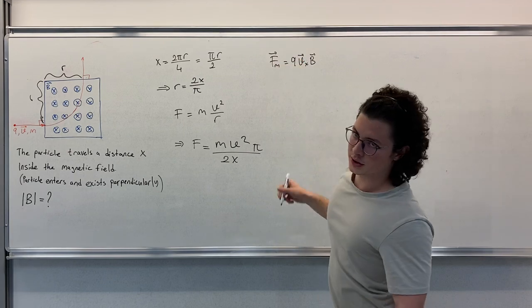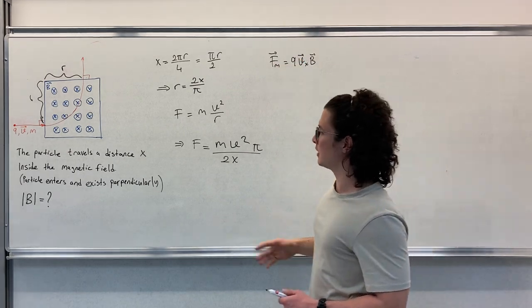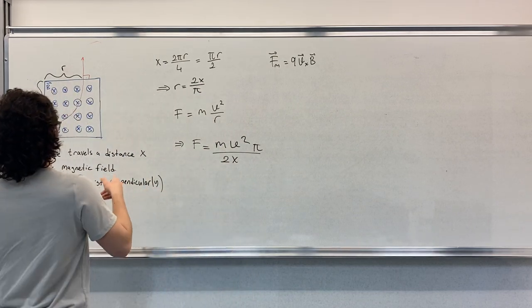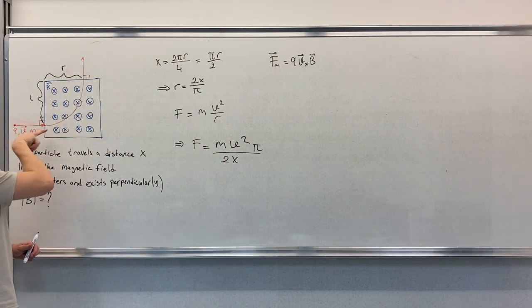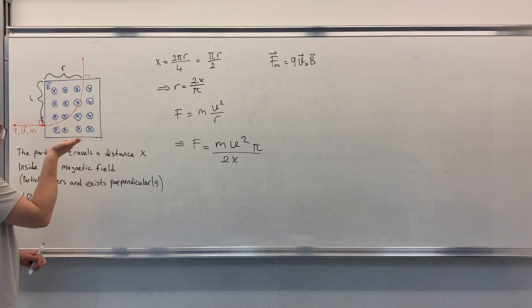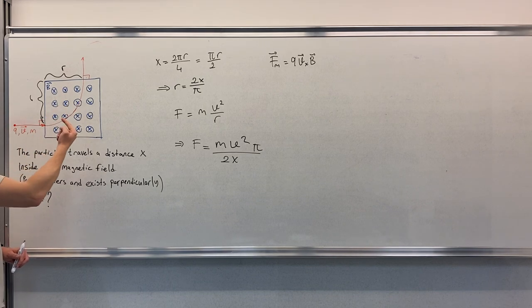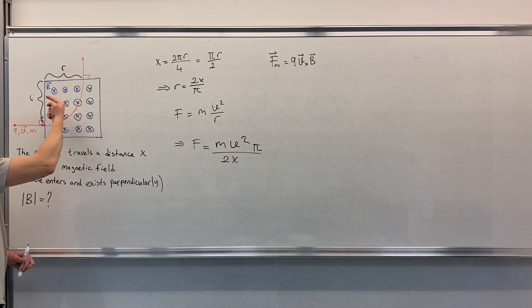This is a vector notation, so this cross product states that as this particle enters here, magnetic field points inwards. Therefore, we will always have a force pointing to the center of the circle like this.